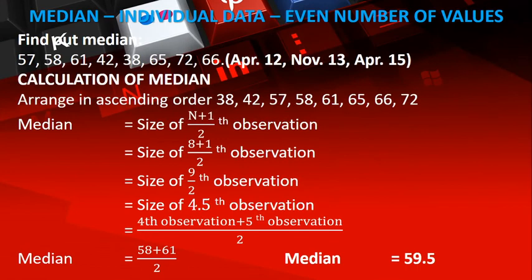Now, there is a situation where we have an even number of values. Here we have 1, 2, 3, 4, 5, 6, 7, 8 values - eight values total. The first step, as we always do for finding the median, is to arrange in ascending order.